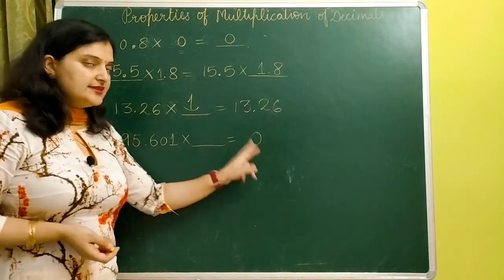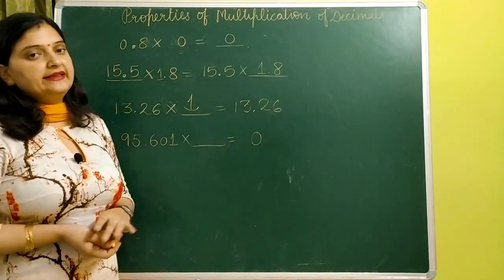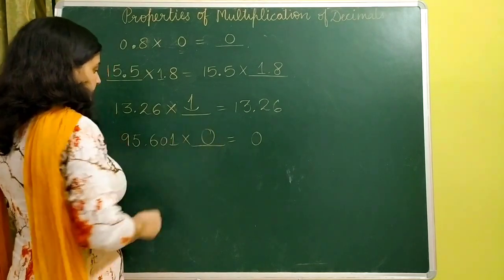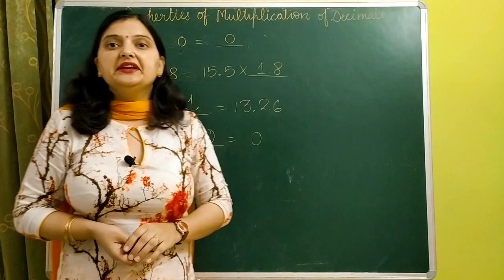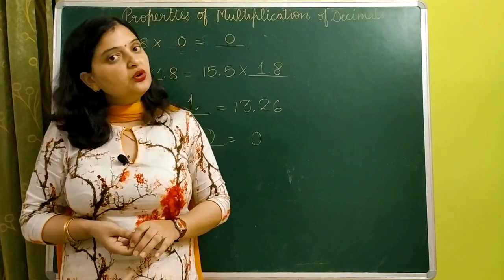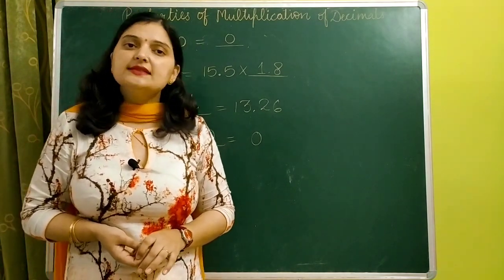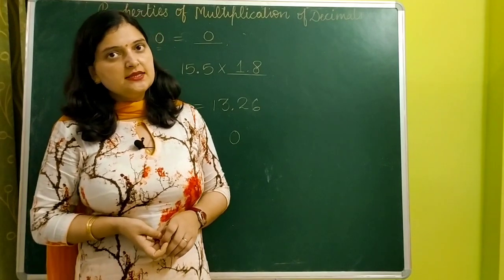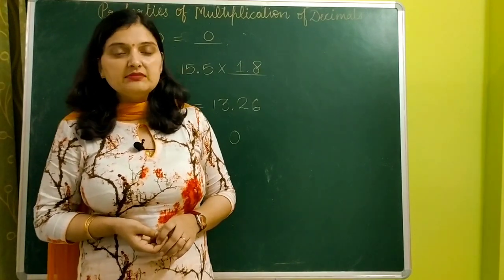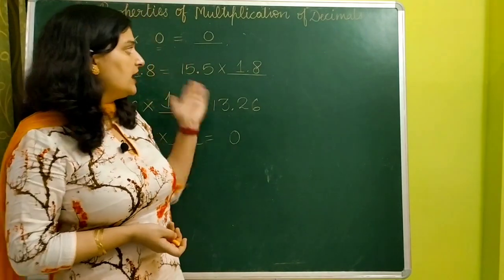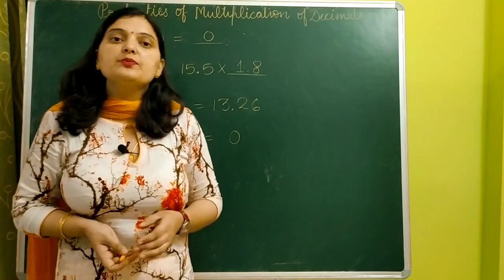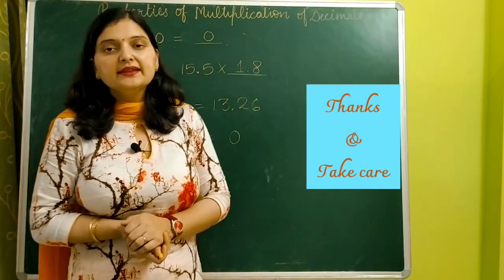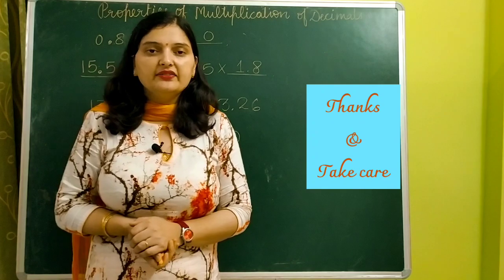The last one: we are getting 0 after multiplication, so our answer will be 0 — because whenever we multiply any number by 0, we always get 0. So these are a few properties of multiplication of decimals. Practice these properties in your calculations. Thank you and have a nice day!